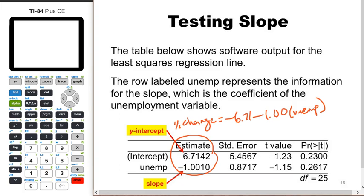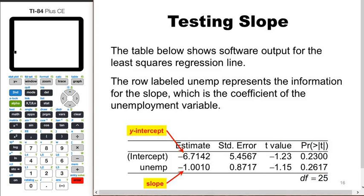The next column is the standard error — those will be given to you, they're a real pain to compute. The next column is the test statistic and p-value. We need to be cautious about exactly what these are testing. The first row gives the test statistic and p-value for the null hypothesis where β₀ equals zero versus the alternative of β₀ not equal to zero — a two-sided test for whether the intercept is zero.